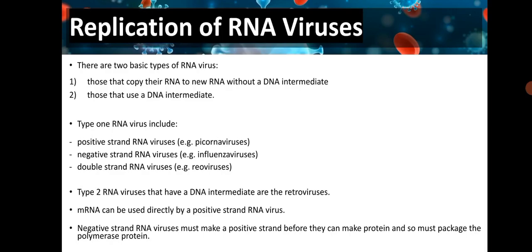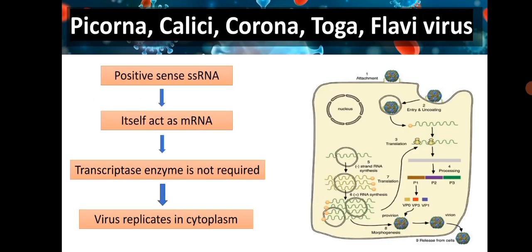Messenger RNA can be used directly by positive-stranded RNA viruses. Negative-stranded RNA viruses must first make a positive strand before making protein and so must package their own polymerase. In RNA viruses like picorna, calici, corona, toga, and flavivirus, the positive-stranded RNA itself acts as messenger RNA; hence transcriptase enzyme is not required, and the virus replicates in the cytoplasm.